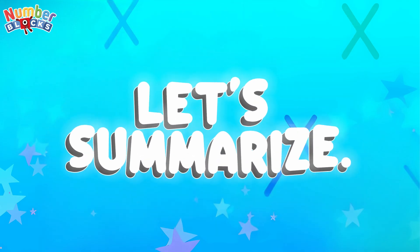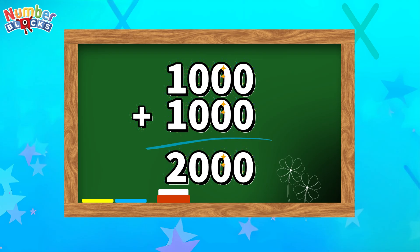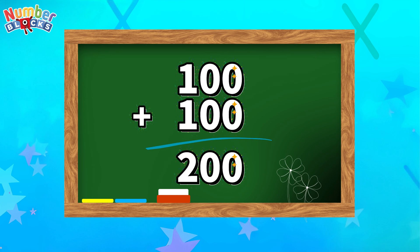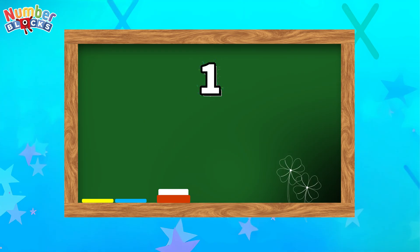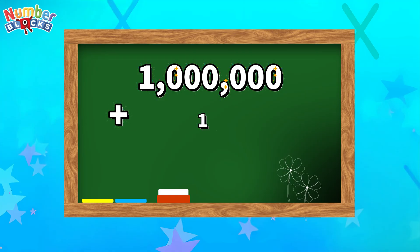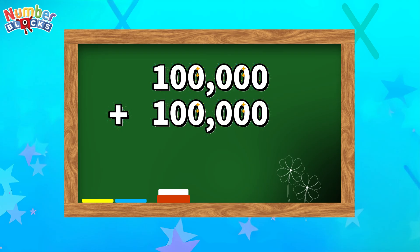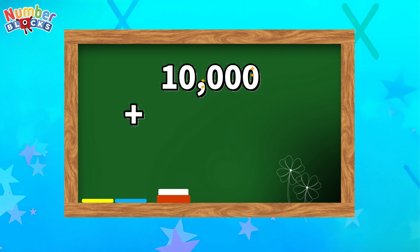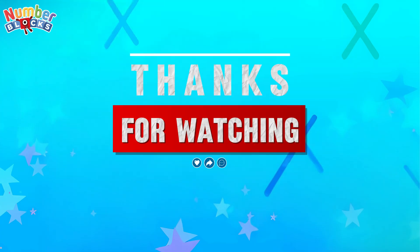Let's summarize. 1,000 plus 1,000 equals 2,000. 100 plus 100 equals 200. 10 plus 10 equals 20. 1 plus 1 equals 2. 1,000,000 plus 1,000,000 equals 2,000,000. 100,000 plus 100,000 equals 200,000. 10,000 plus 10,000 equals 20,000.